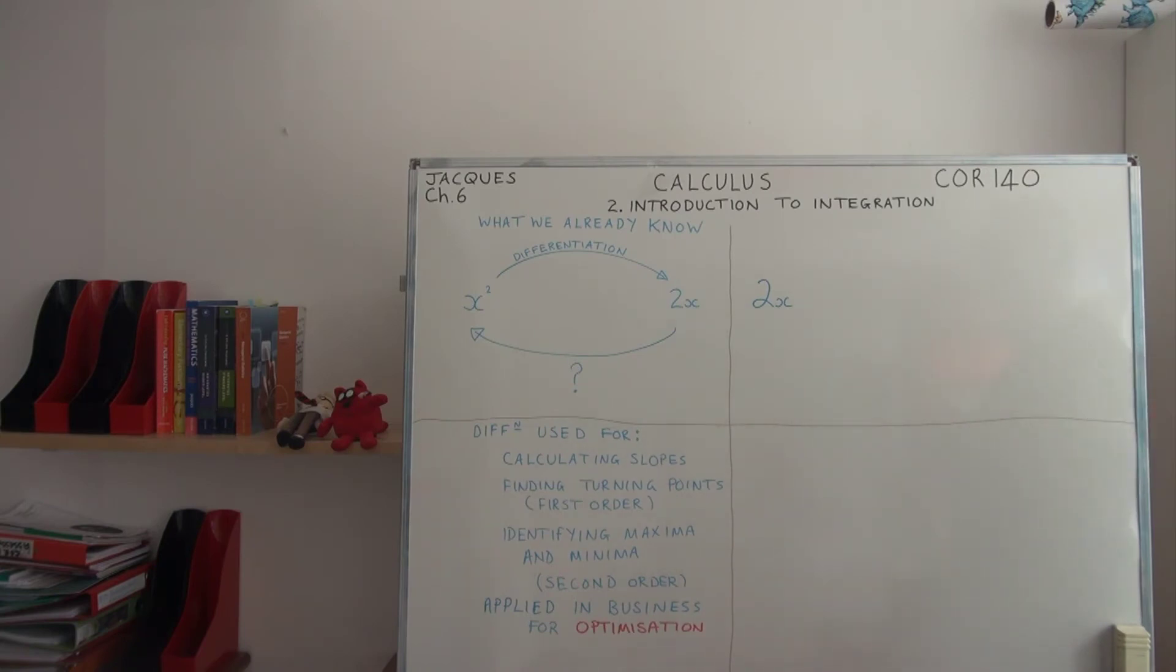2x we can write as 2x to the 1. We increase that power by 1 to get 2x², then we divide by the new power, 2. So our process brings us to 2x² divided by 2. Here the power has gone up by 1 and the new power is in the denominator.